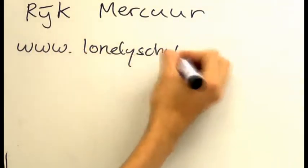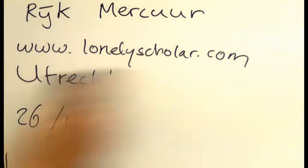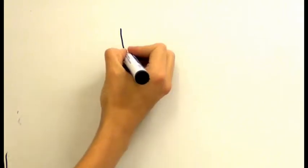Hello everybody, my name is Rijk Mercure and I work for LonelyScholar.com. This is the second movie in the series, and today I want to tell you all about this symbol, the double turnstile. This is often called the logical implication, which is different from our old friend, the material implication, which I talked about in the previous movie.